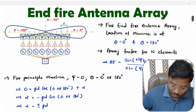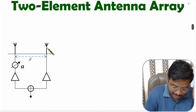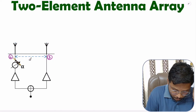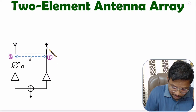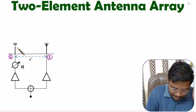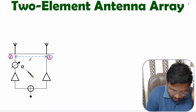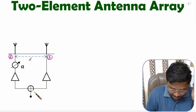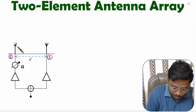Here you can observe we have two element antenna array. This is element number one — that is the reference element. And this is element number two. The reference element is connected with zero phase, and the second element is provided with a phase of alpha. Here, these two are amplifiers and here we have a power divider circuit. So these two elements are radiating in space.